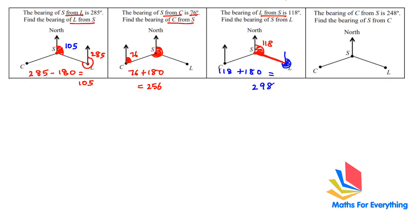Next: the bearing of C from S is 248 — so this whole angle is 248. Find the bearing of S from C: the reflex angle is given, so subtract 180: 248 minus 180 equals 68. Written as three digits, the bearing is 068.